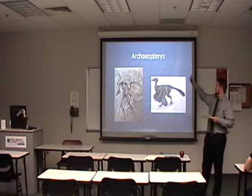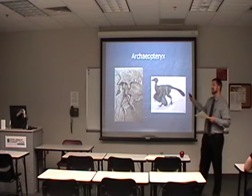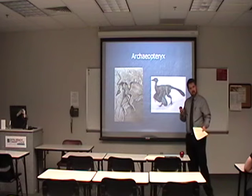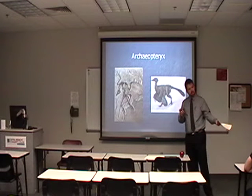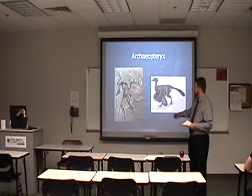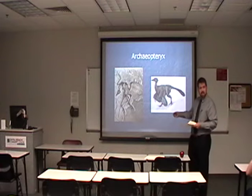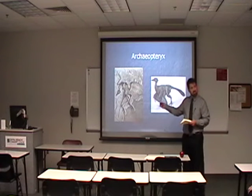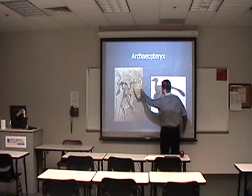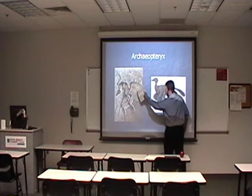This is the Archaeopteryx, which is basically the intermediate between a dinosaur and a bird. It had warm blood, laid eggs, and had feathers. You can actually see the feathers in the fossil.